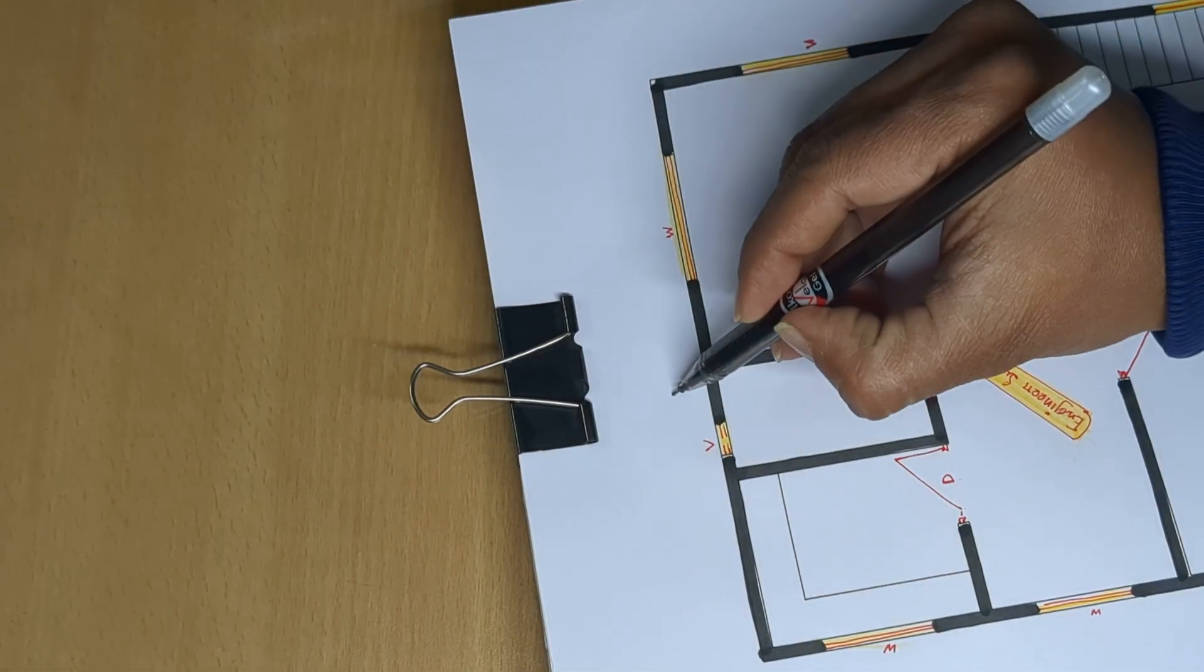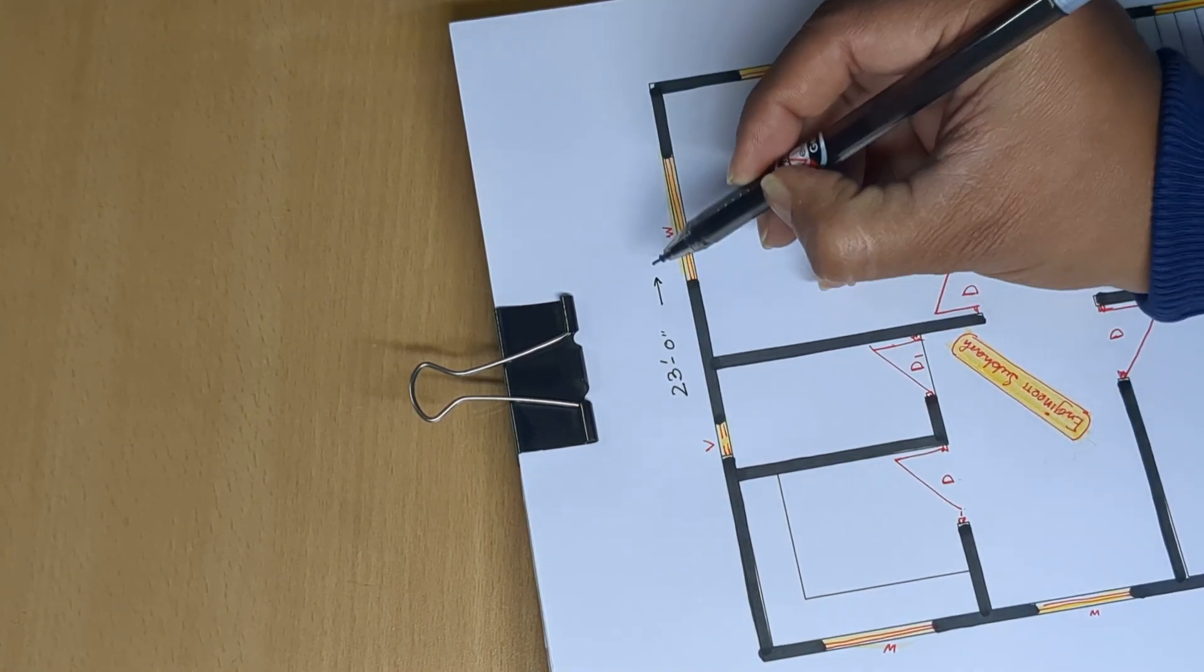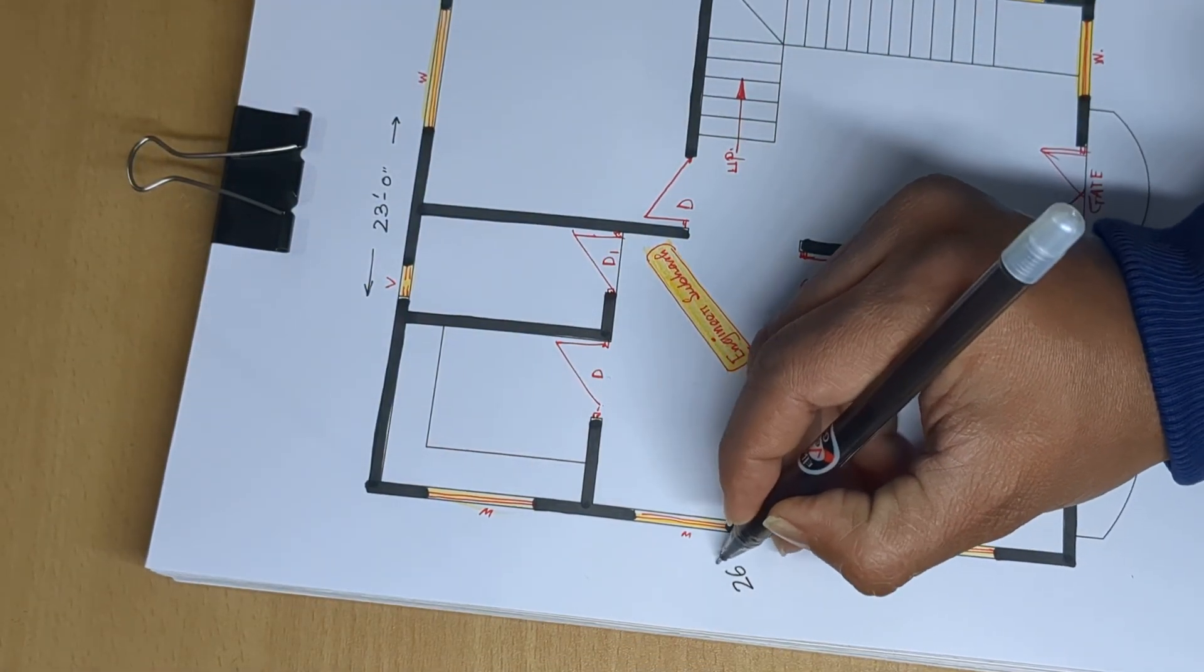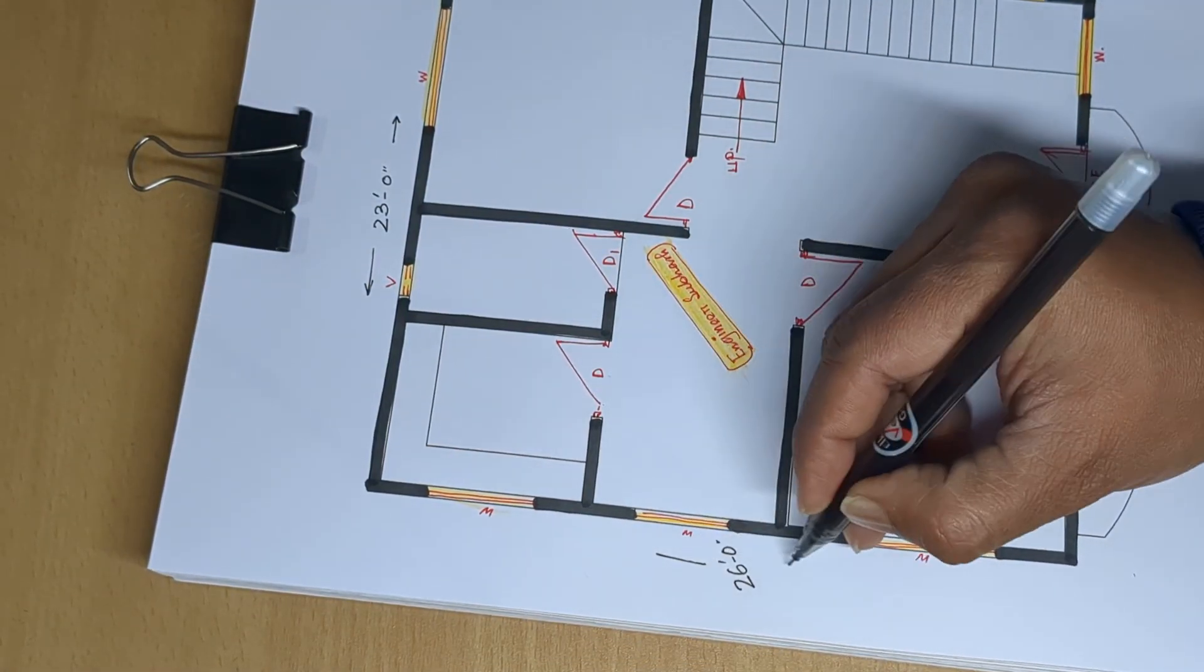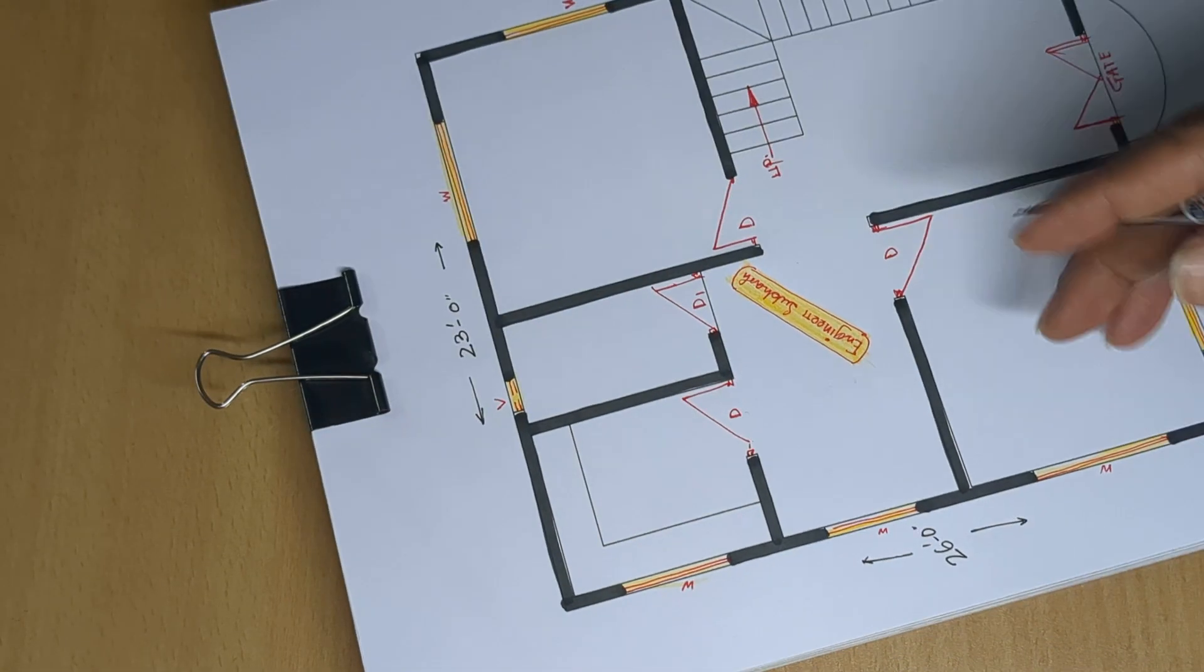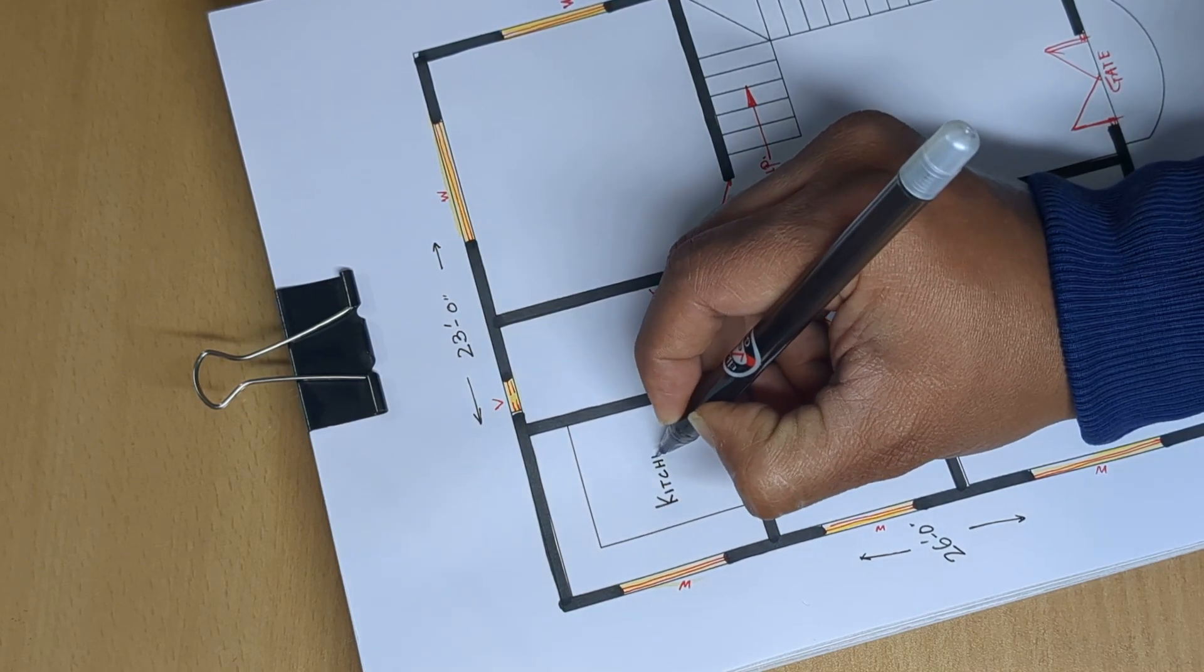Twenty three feet zero inch and twenty six feet zero inch as a measurement. Acting kitchen, kitchen.